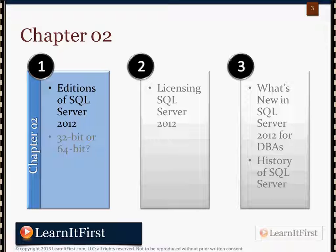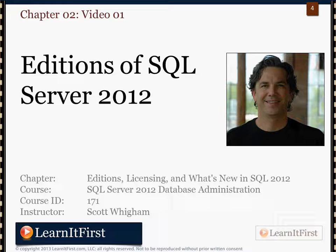Here's our chapter outline. We'll start with the editions, work into the architecture — 32-bit or 64 — talk about licensing, and then get into what's new.